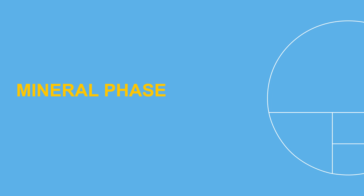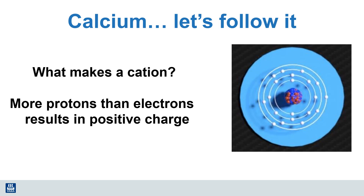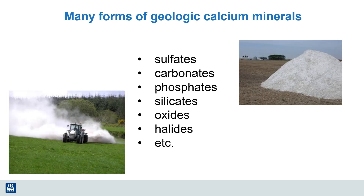Let's begin with the mineral phase or the mineral form of calcium. Most calcium is found in the cationic form of a 2+ charge atom. A cation occurs when an atom has more protons than electrons, so this imbalance leaves that atom with a permanent positive charge. For soils, that's important because cations are held on the negatively charged exchange sites in the soil. Calcium almost always occurs in nature as a cation, although elemental metallic calcium can be made in the lab.